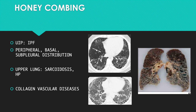Honeycombing is pathognomonic of the UIP pattern in idiopathic pulmonary fibrosis and usually suggests an advanced stage. It starts in the peripheries at the bases in a subpleural distribution. Sometimes it can be in the upper lobes, especially in sarcoidosis or hypersensitivity pneumonitis. It is also seen in collagen vascular diseases. In connective tissue disease–ILD, exuberant honeycombing covering more than two-thirds of the lungs may occur and may abruptly end with a straight line.